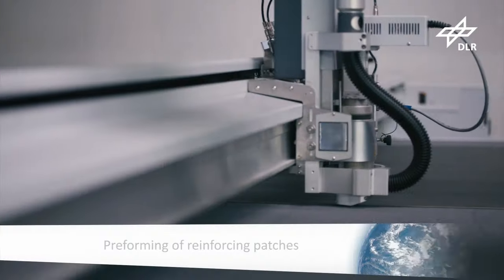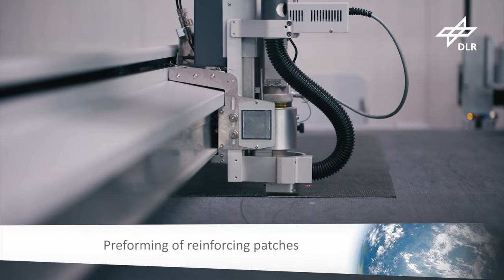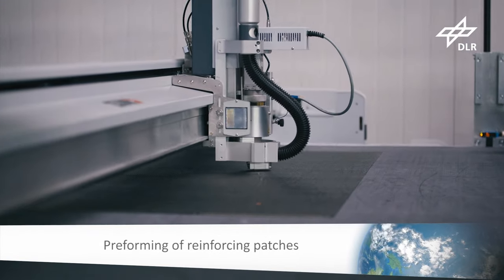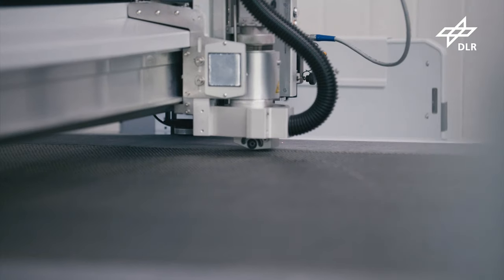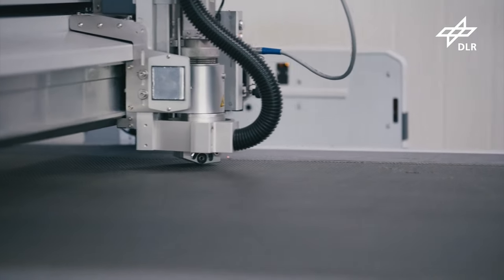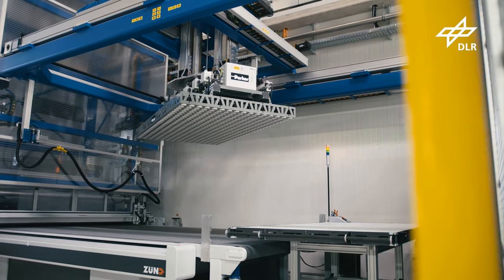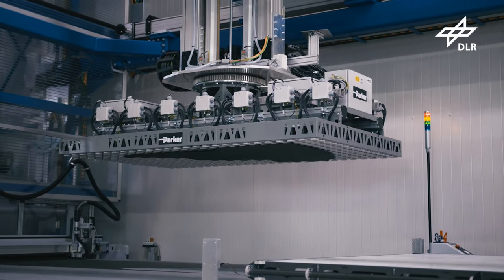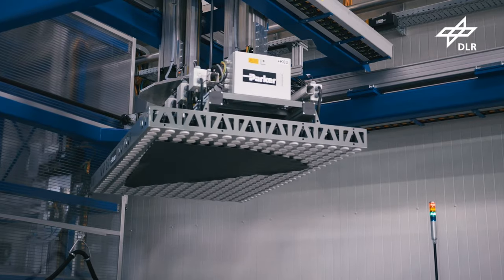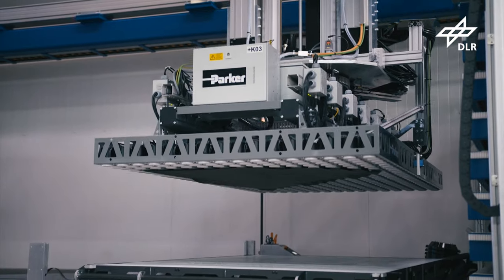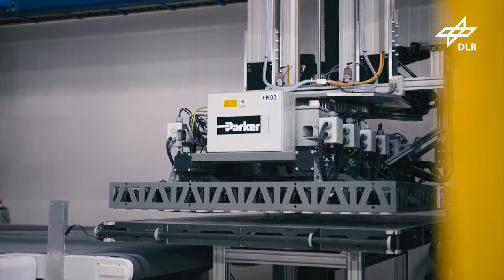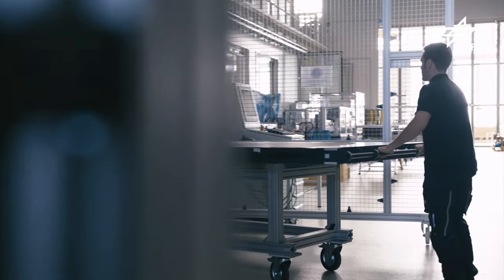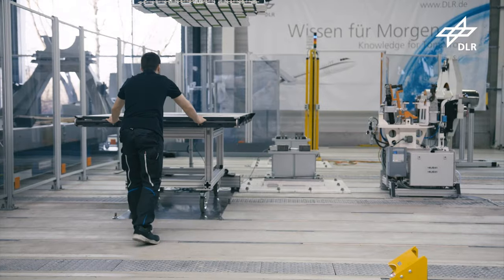The reinforcing patches are cut with automated cutting machine, lifted by a gripper and placed on movable transport table. Then the transfer to the robotic cell occurs.